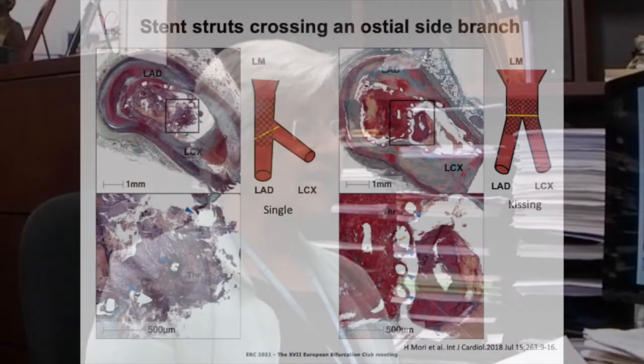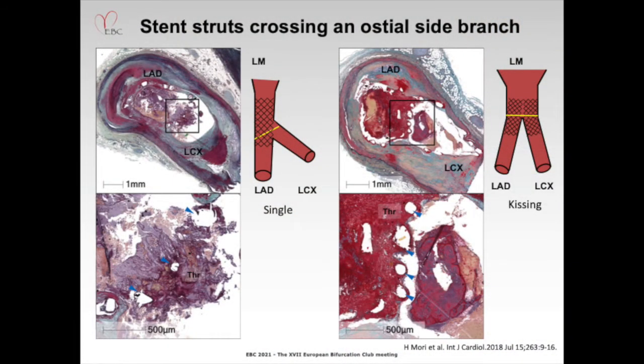Here is a single stent at the bifurcation, and you can see bifurcation thrombus formation in the circumflex. On the right side is shown a kissing lesion — the left anterior descending and the left circumflex. Because there are so many struts in the ostial region, that leads to stent thrombosis as shown in these pictures.